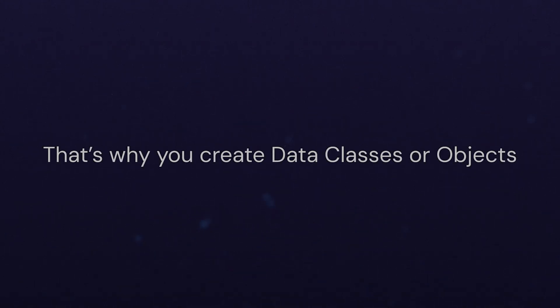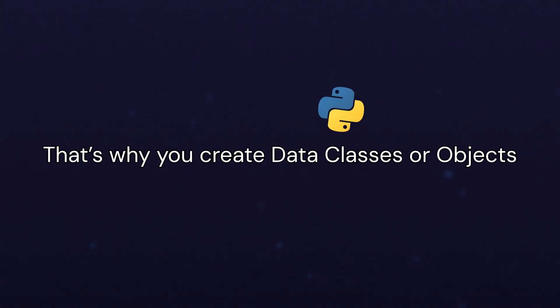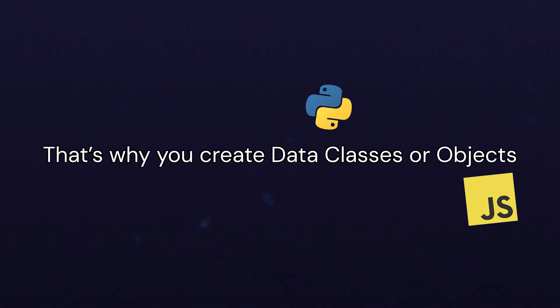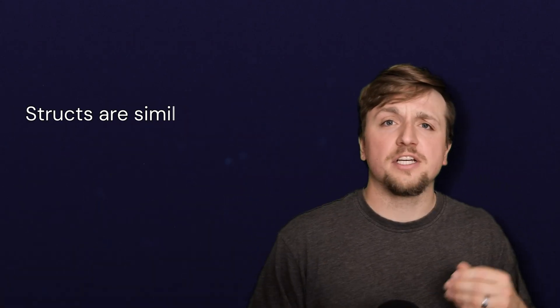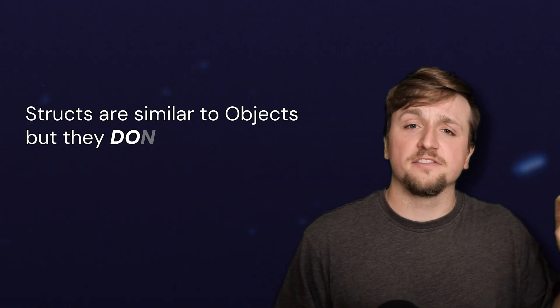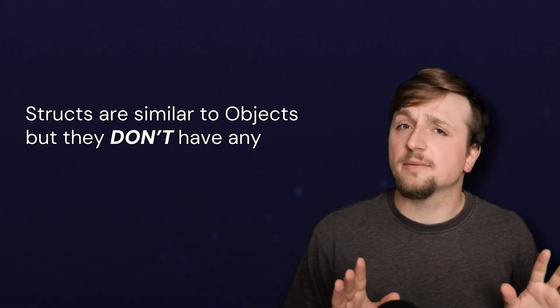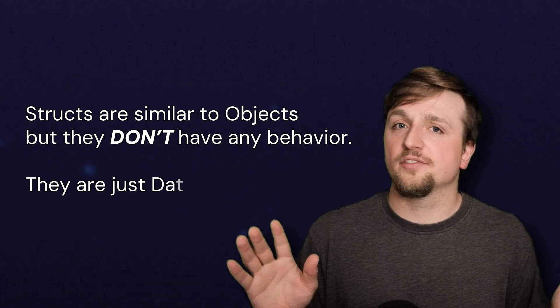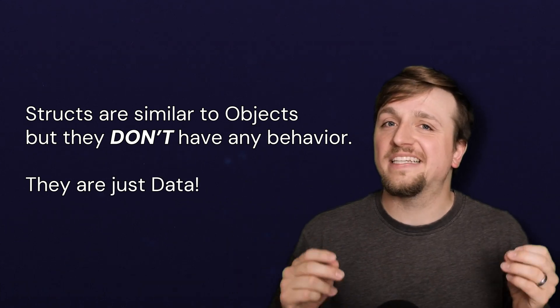This is the same reason why you would often make something like a data class in Python or a simple object in JavaScript. They are similar to objects in that they have a list of fields, but as I mentioned, they don't have any methods. They're only data — they have no behavior.